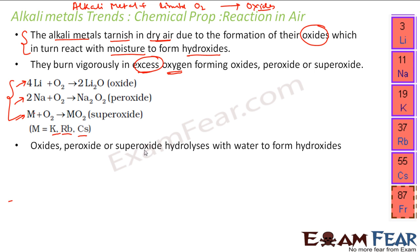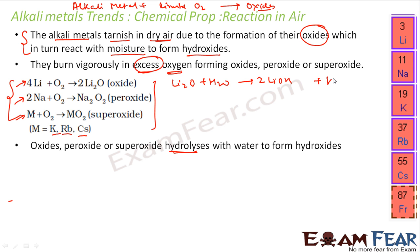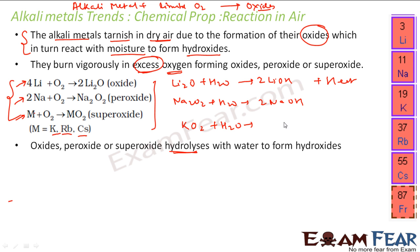All these oxides, superoxides and peroxides hydrolyze with water to form hydroxides. For example, Li₂O reacts with water to form LiOH and also releases heat. Na₂O₂ (sodium peroxide) reacts with water to form 2NaOH with no heat released. Potassium superoxide reacts with water to form potassium hydroxide, H₂O₂ (hydrogen peroxide), and hydroxide — and here also no heat is released. So all oxides, superoxides and peroxides hydrolyze to form hydroxides.